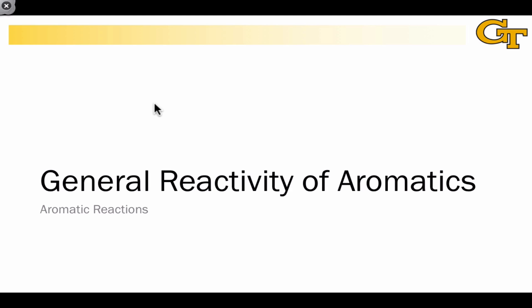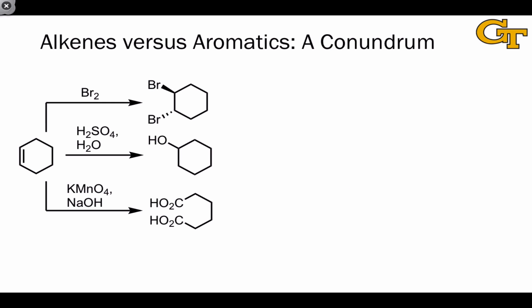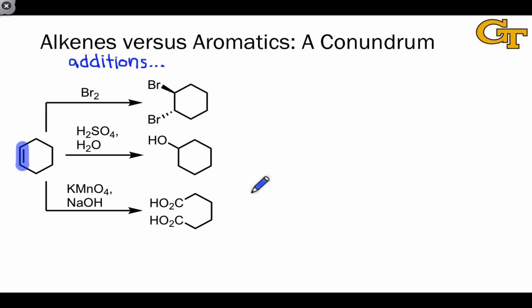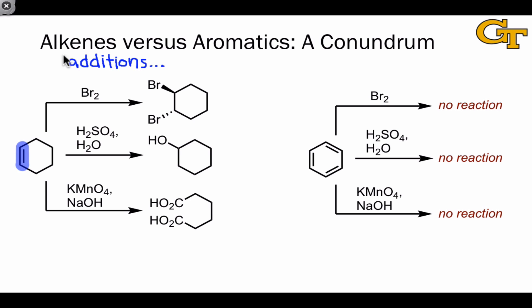We'll begin with a lesson on the general reactivity of aromatics. To start, I want to note the correspondence between alkenes and aromatics — both are characterized by carbon-carbon double bonds. The alkene pi bond can act as a nucleophile toward electrophilic reagents and engage in addition reactions, such as the addition of Br2 (halogenation), hydration catalyzed by acid, and even oxidation reactions like 1,2-dihydroxylation or oxidative cleavage. What happens when we subject benzene, which looks superficially very similar, to the same reaction conditions?